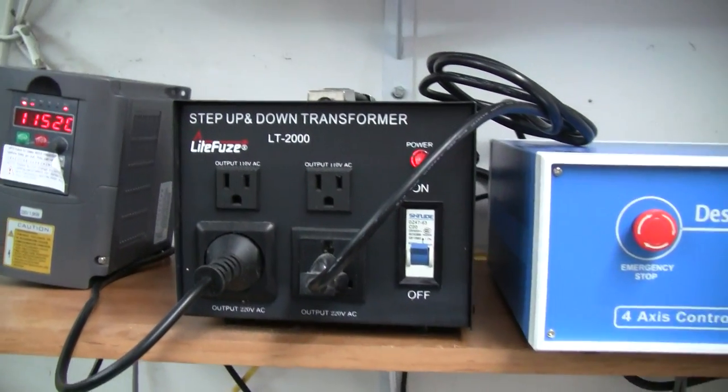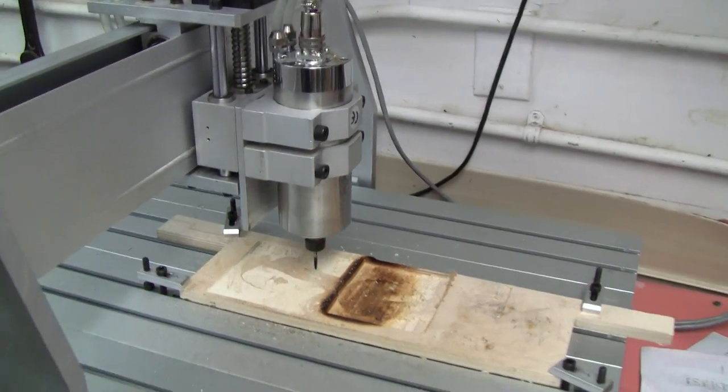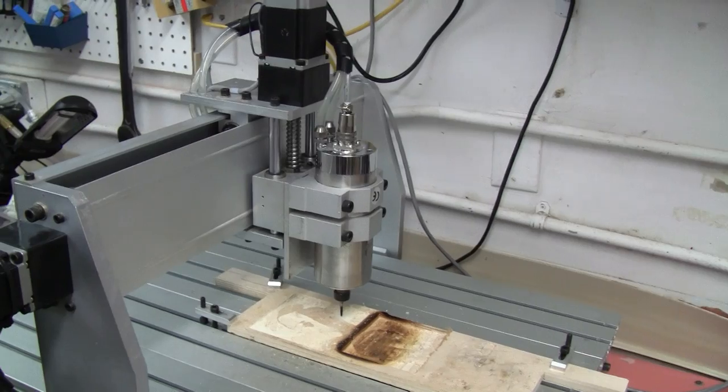The 220-volt unit, we had to get a step-up for that. Here's the controller, supposedly set up for doing a 4th axis, but we don't have a 4th axis going.